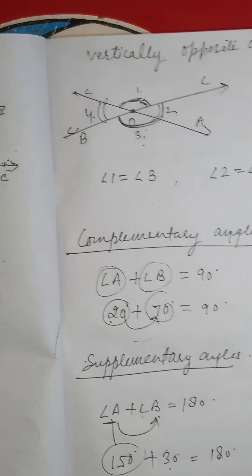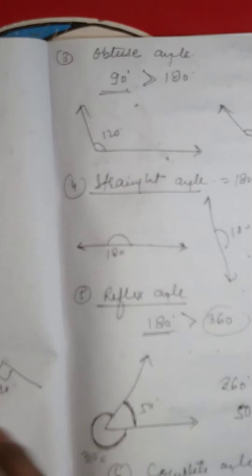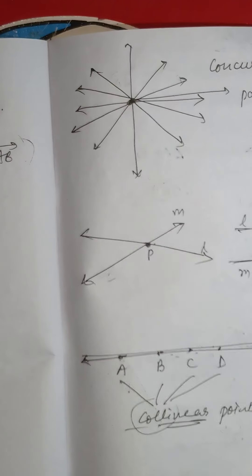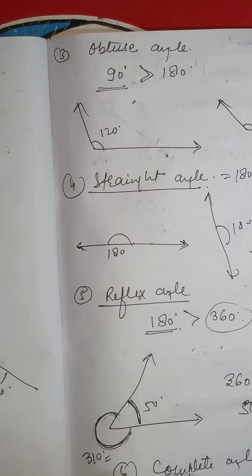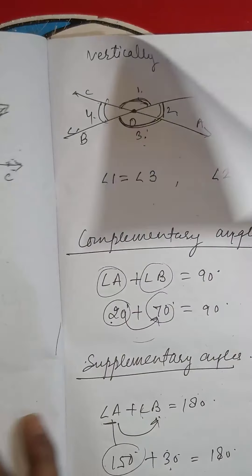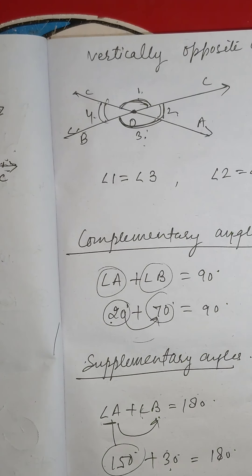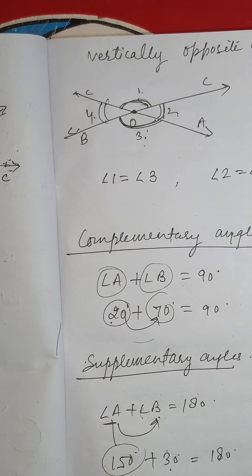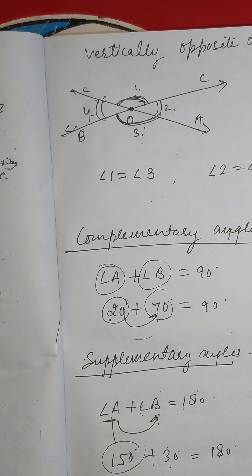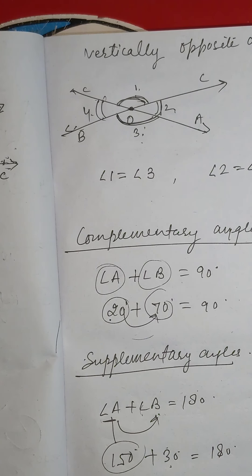That covers the basic fundamentals of lines and angles — rays, line segments, different types of angles, linear pairs, vertically opposite angles, and complementary and supplementary angles. This was the first part. I will be coming back with the second video covering the second part of this topic. Take care and bye bye.